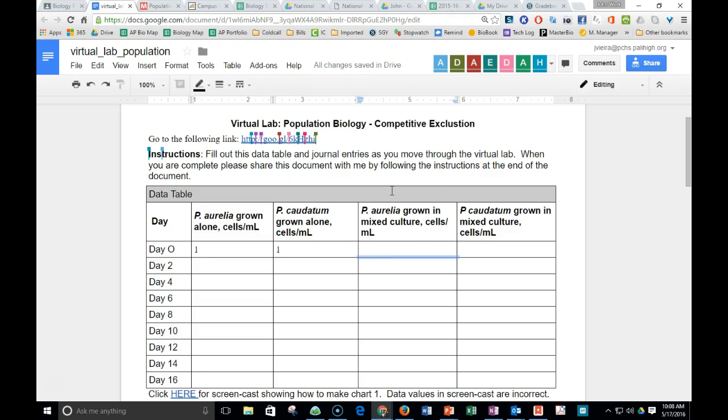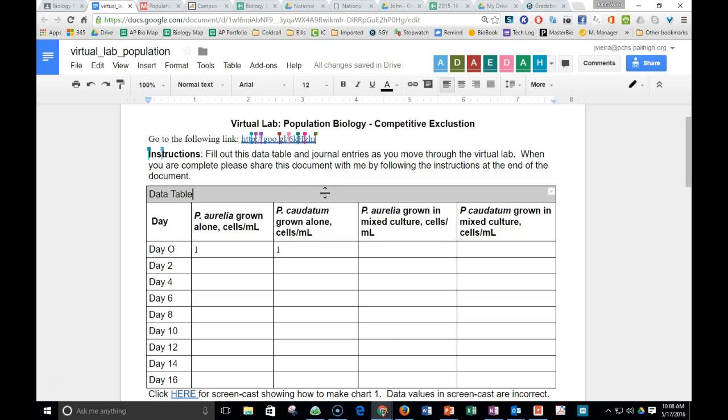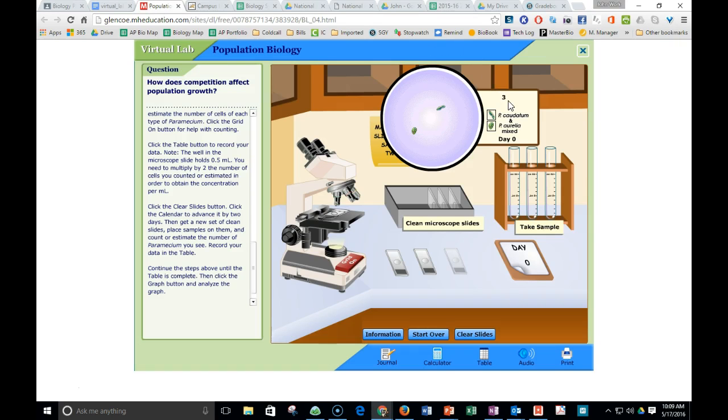Now the third slide, the third slide is both of these two columns. So the third slide, they're both together in the same mixture. And so there's one caudatum and one aurelia. So you'll go one and one. That's slide number three. That's slide three, not how many there are.